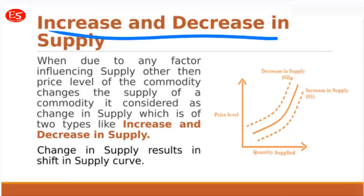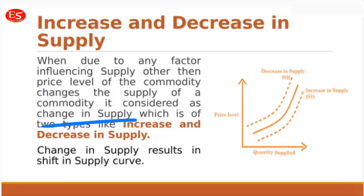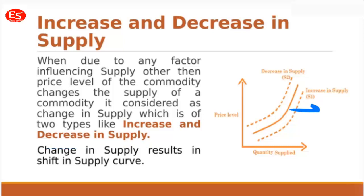Similarly, we have increase and decrease in supply. Just as increase and decrease in demand occur due to factors other than price, the same applies to supply. When the supply of a commodity changes due to any factor other than price, it is considered a change in supply, which can be of two types: increase or decrease. Increase in supply shifts the supply curve to the right side, whereas decrease in supply shifts it to the left-hand side.